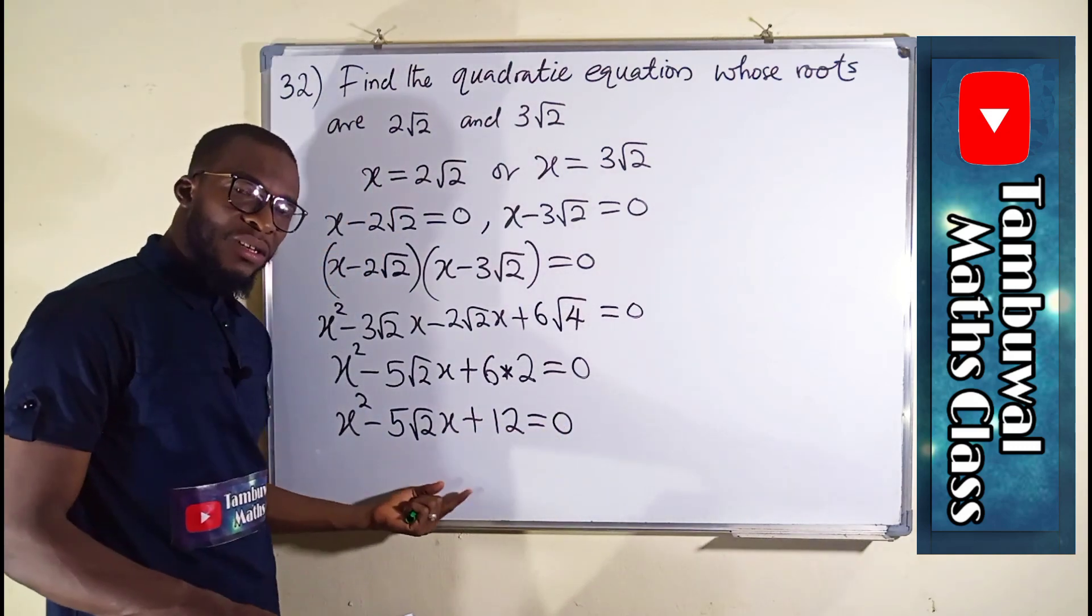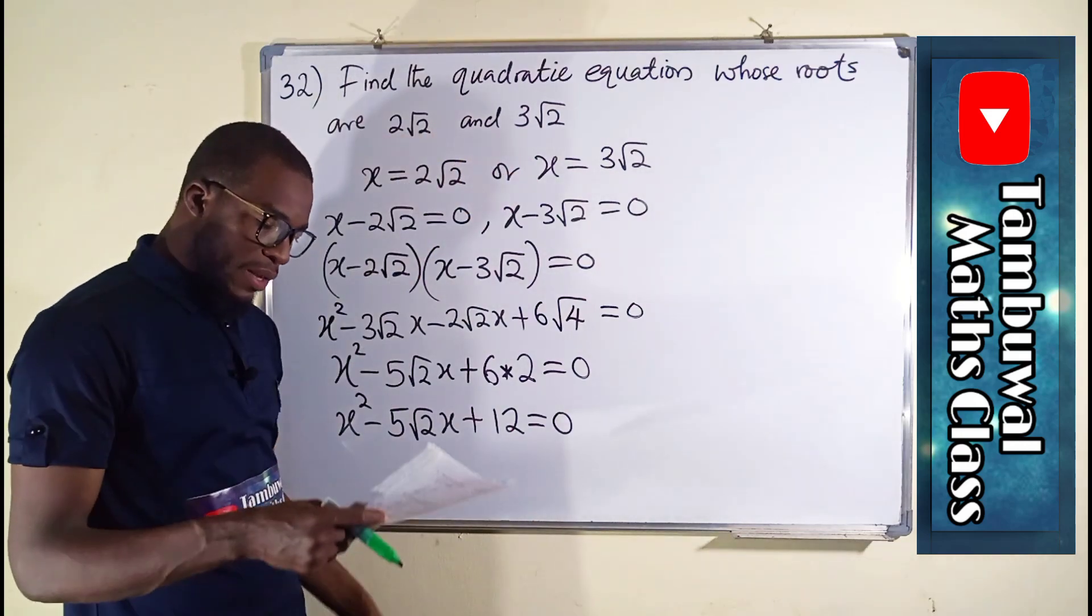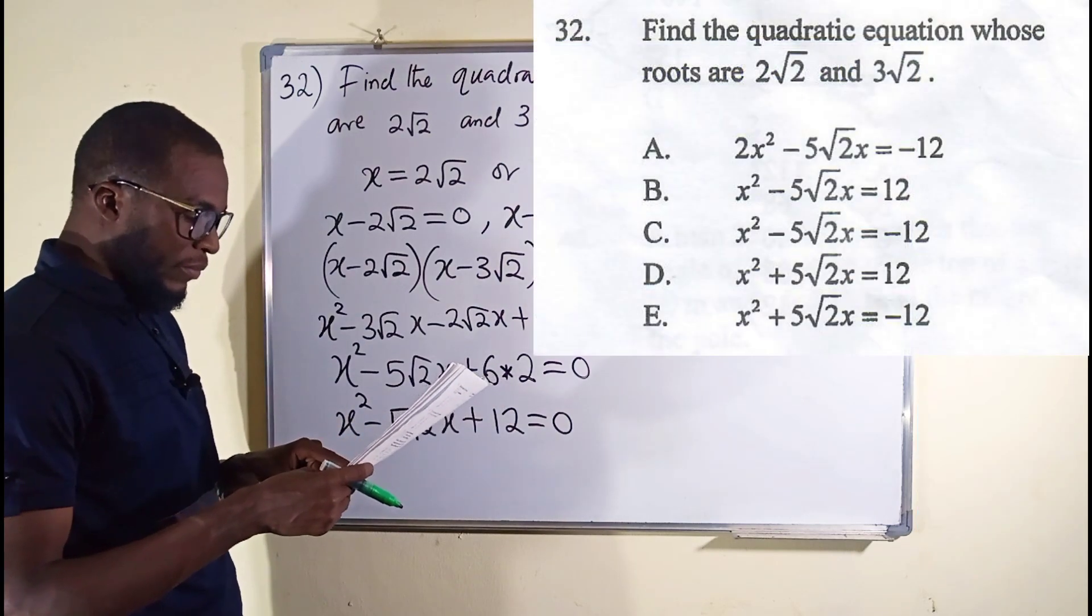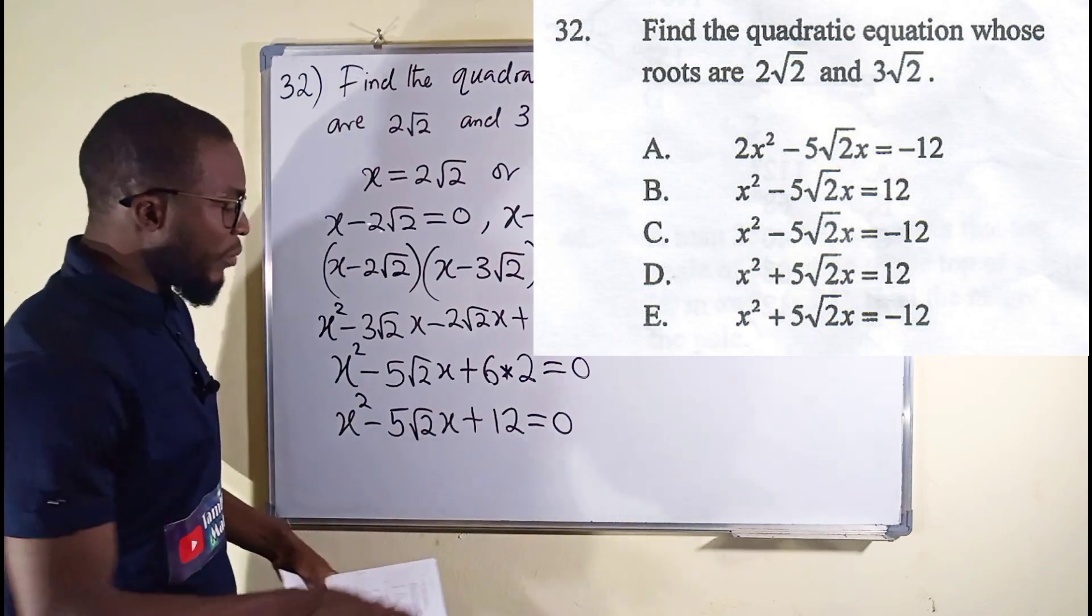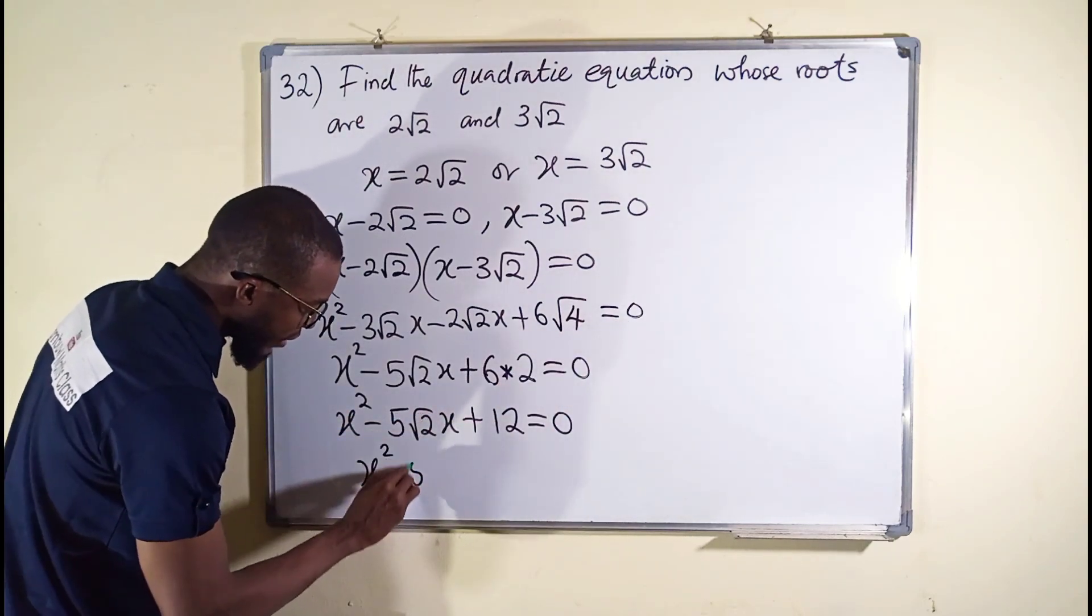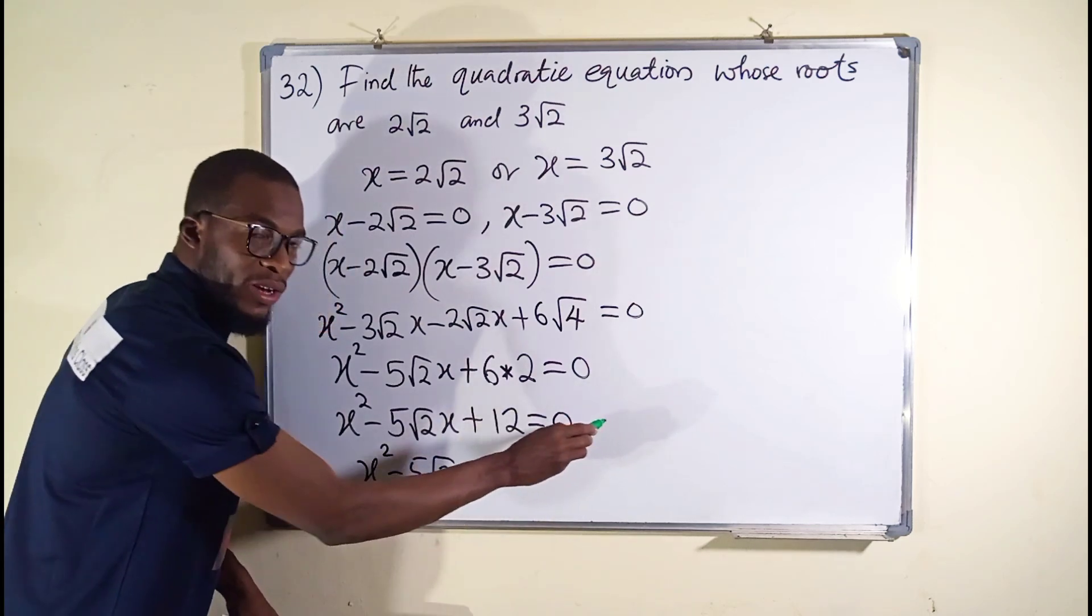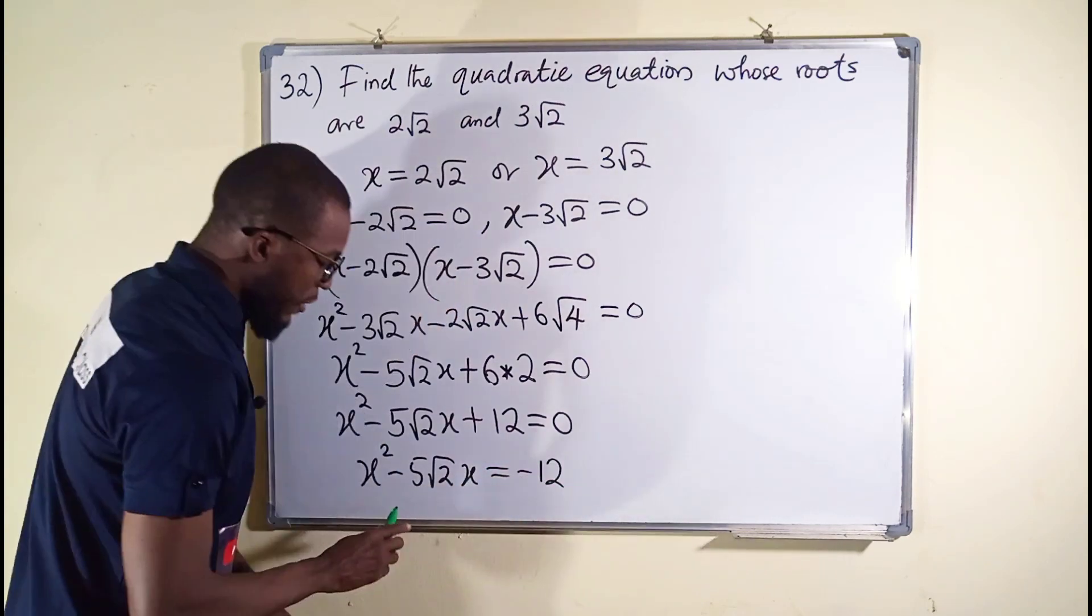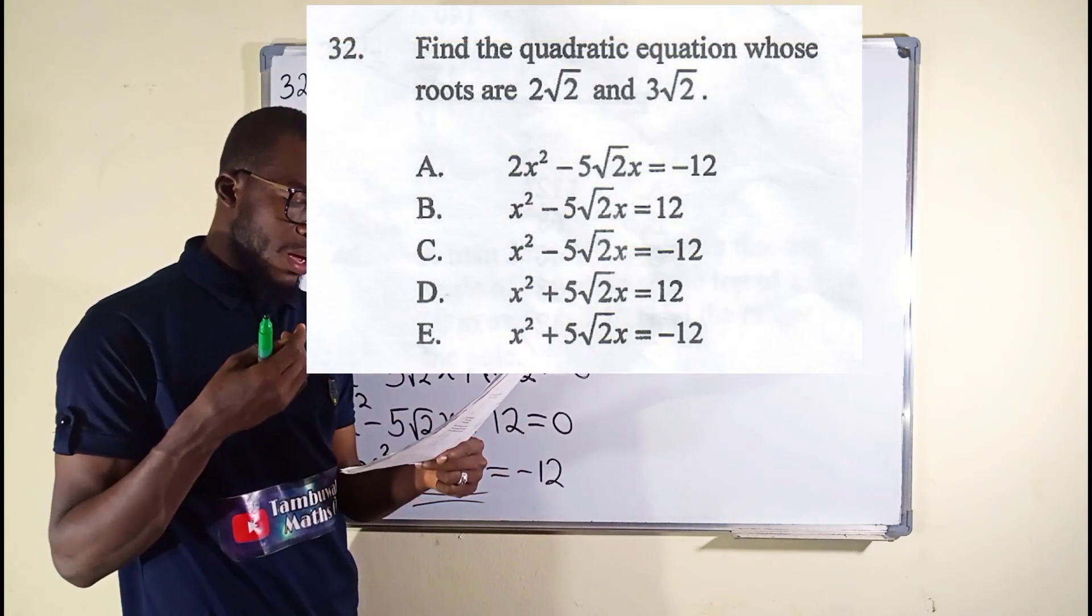So this is the quadratic equation which has been solved to obtain these two roots, and I can see here from the option, is option C. Just that the way they have written it differs from how we got it because they decided to take the constant to the right. It's all the same. You can see x² - 5√2x. If this one crosses over the equality sign, it becomes negative minus 12. This is the option they have from the question paper here, which is option C.